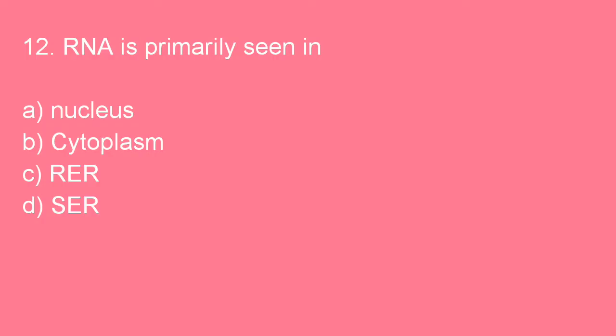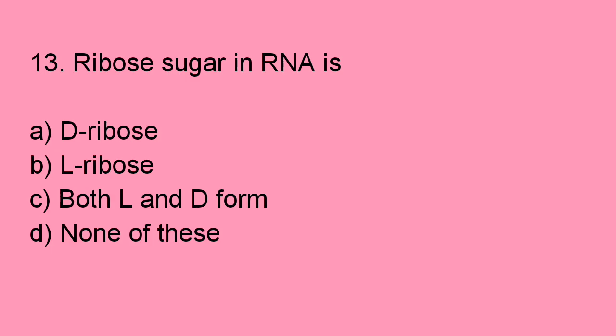Next question: RNA is primarily seen in the cytoplasm. Option B is right.